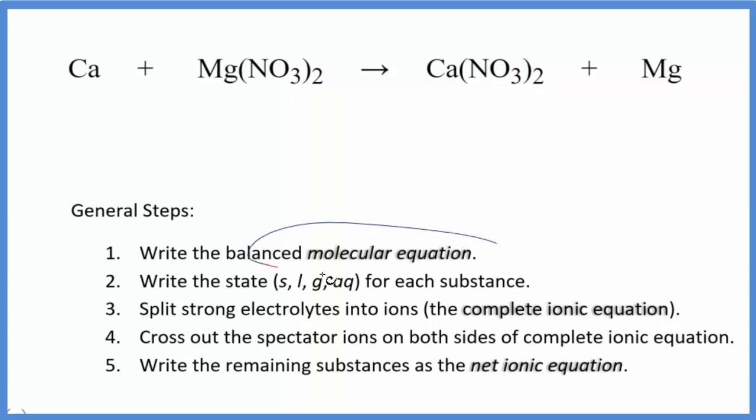So the first thing with net ionic equations, we balance the molecular equation. In this case, it's already balanced. I have two nitrate ions here and two over here. I have a calcium on each side and a magnesium on each side. So that's balanced.